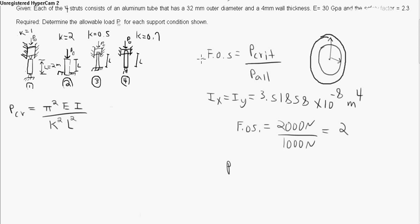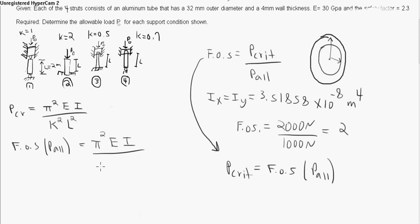Whenever we take this formula and we can do some algebra on it, we would say that the P critical equals the factor of safety times the P allowable. And what we're going to do is we're going to plug this P critical into this side of the P critical of this formula right here. So we're going to say the factor of safety times the P allowable equals pi squared times the modulus of elasticity times the area moment of inertia divided by the fixity condition squared divided by the length squared.